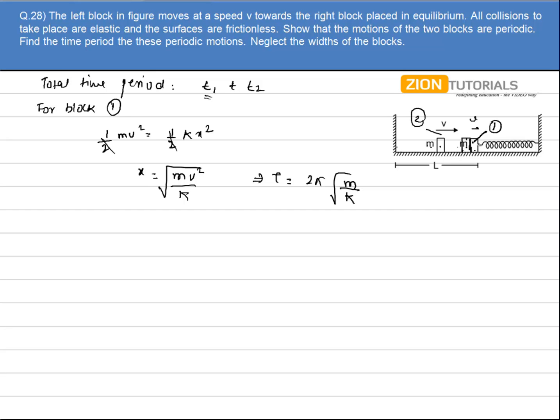But what actually happening is that block is not performing complete SHM. It is going to extreme position and coming back to its mean position, from mean to extreme and extreme to back to mean. So the total time t1 will be equal to half of the time period. It will be equal to pi under root of m by k.